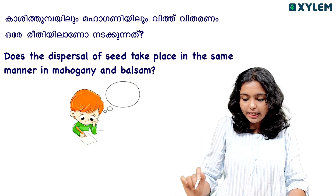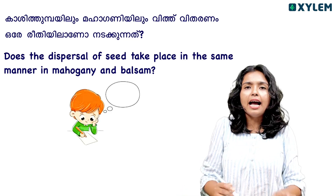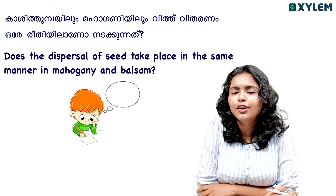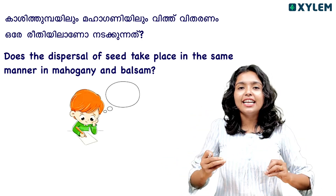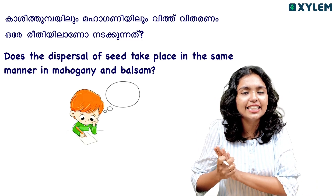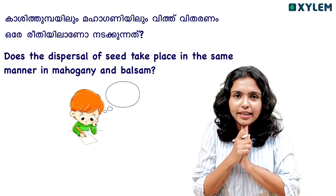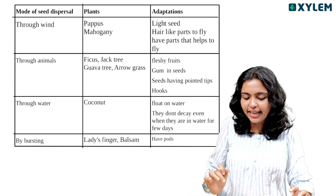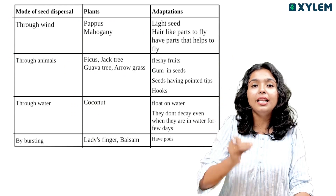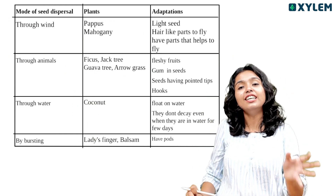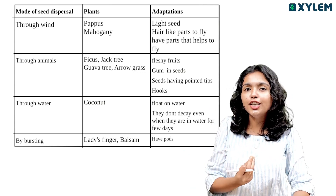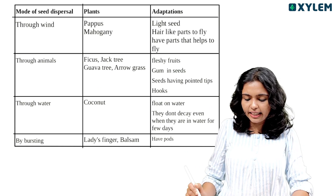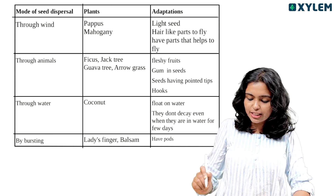Does the dispersal of seeds take place in the same manner in mahogany and balsam? I will give you a comment in the comments below. Then I will tell you a little bit about this. You can add examples like cappuss, pecus, jackfruit tree, guava, coconut, ladies finger, and balsam.